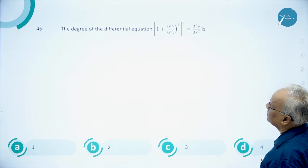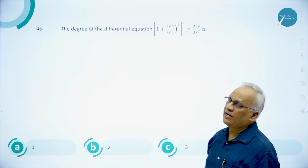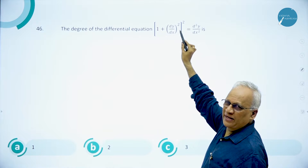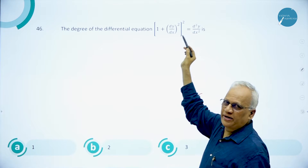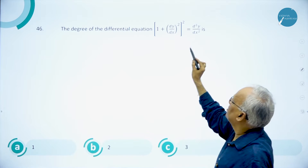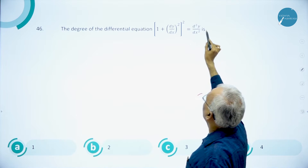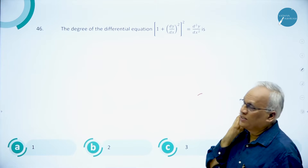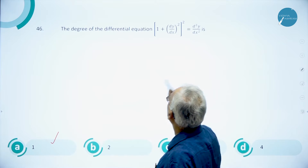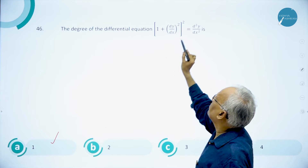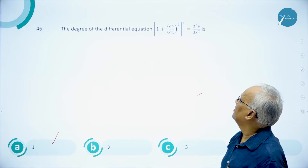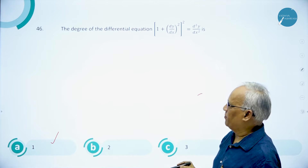Question 46: the degree of the differential equation. Be careful — when a derivative is under a radical sign you must clear it first. Here the degree is the power of the highest order derivative, which is 1. So degree of the equation is 1, whereas the order is 2. Answer is A.